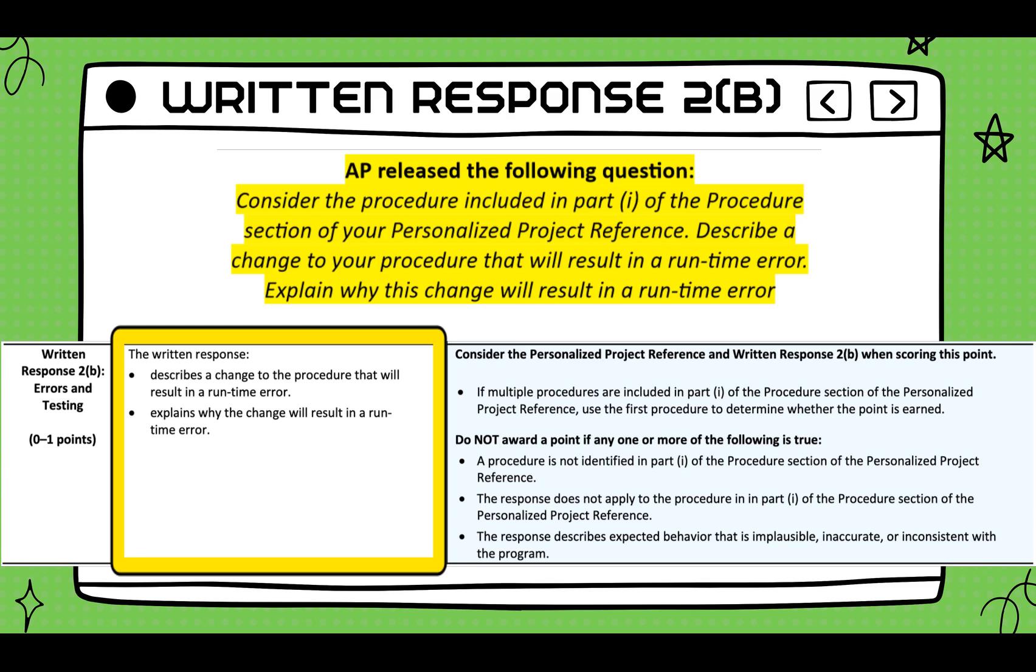To earn a point for this row, again, AP is expecting you to address two topics. First is how many times the loop from your function in your PPR will go through the list. Describe how you know it will go through that many times. Don't just say a number. Second, you will need to describe a way a runtime error would occur in your function. Remember what a runtime error is. This needs to apply specifically to your code. Key to the question is knowing the difference between a runtime and compiler error. Compilers don't let your program run. Runtime happens while the code is executing.